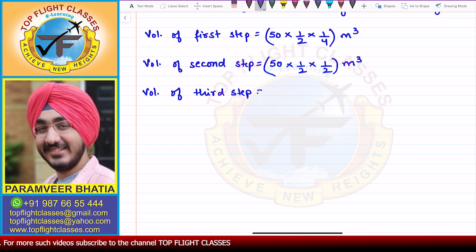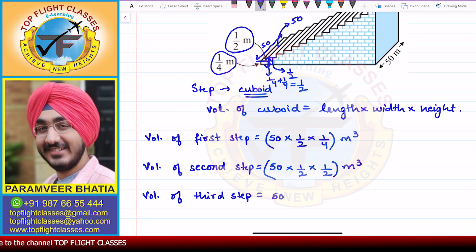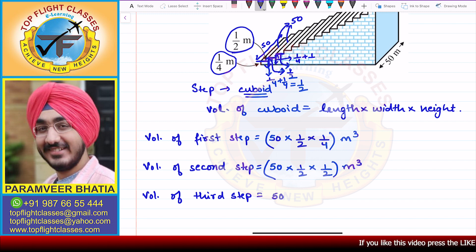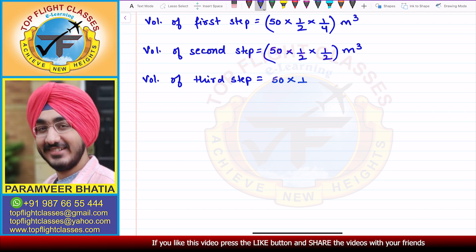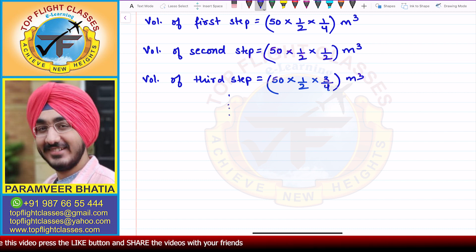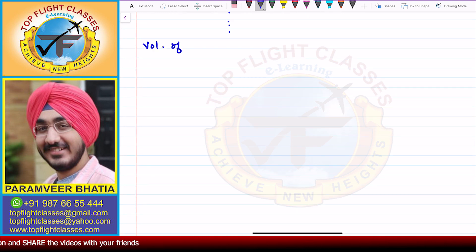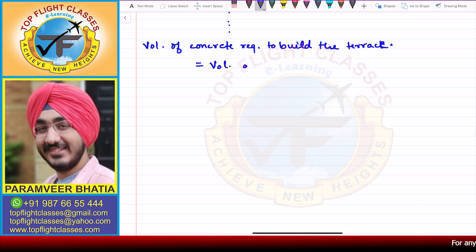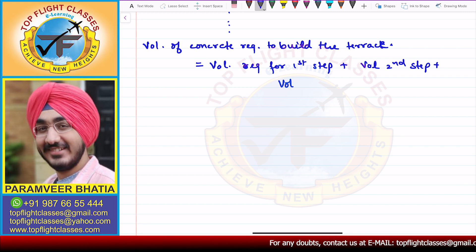For the third step, the length remains 50 and the width remains 1/2, but the height will be 3/4. This pattern continues for all 15 steps. So the total volume of concrete required to build the terrace equals the sum of volumes of all steps: volume of step 1 + volume of step 2 + volume of step 3, and so on, up to the volume of the 15th step.